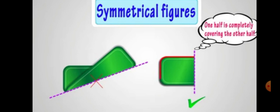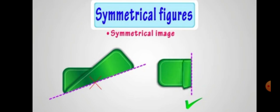Here we can see one half is completely covering the other half. So it means this line of symmetry is correct, and this is a symmetrical rectangle.